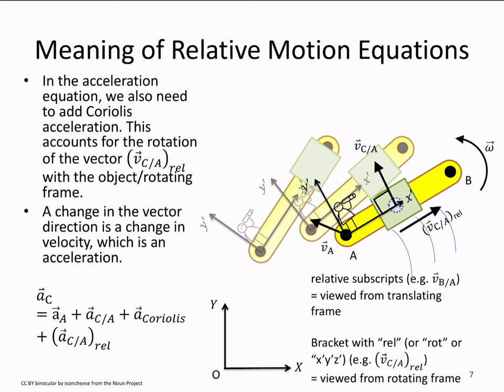When we come to the acceleration equation, we also need to add Coriolis acceleration in addition to the movement of the sticker and the acceleration with respect to the sticker. This is because we're changing the direction of the velocity vector vC with respect to A relative.